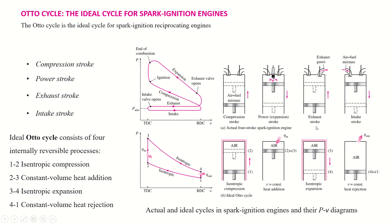The fourth process is constant volume heat rejection. Heat rejection means that hot gases are exhausted from inside the engine to the atmosphere. In this way, heat is rejected from the engine.